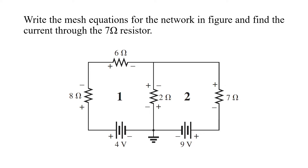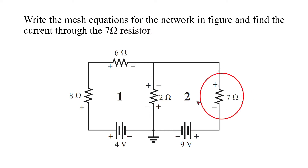Write the Mesh Equations for the network in the figure and find the current through the 7 Ohm resistor. We will see two loops — loop one and loop two. We have a 7 Ohm resistor in the network.